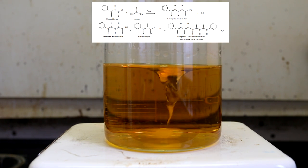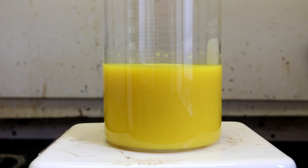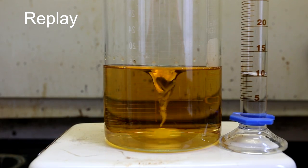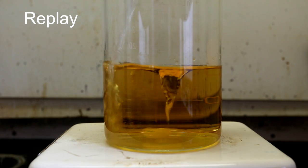This is called a clock reaction because it takes a predictable amount of time for the precipitate to appear. At a constant temperature, such as room temperature, the rate of the reaction is directly proportional to the concentration of hydroxide ions.